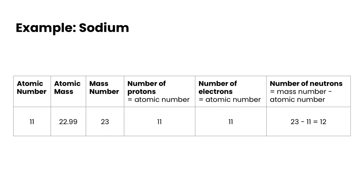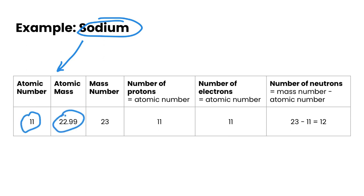As we go through this video we're going to build up a Bohr-Rutherford diagram using the example of sodium. Sodium has an atomic number of 11 and an atomic mass of 22.99. The mass number is the atomic mass rounded off to the nearest whole number, which would be 23, and the number of protons is our atomic number of 11.